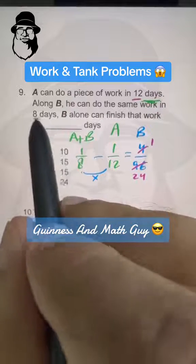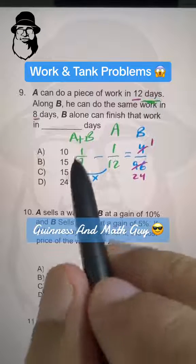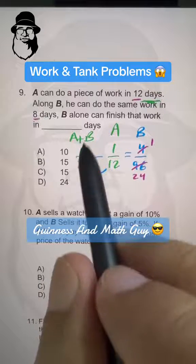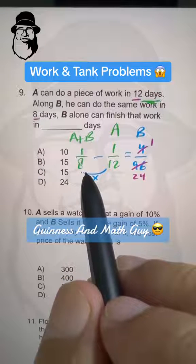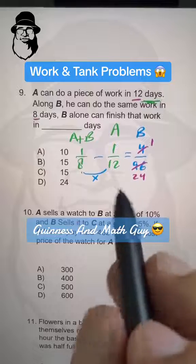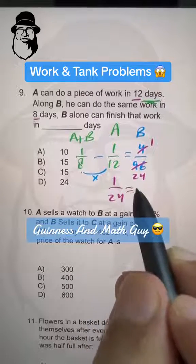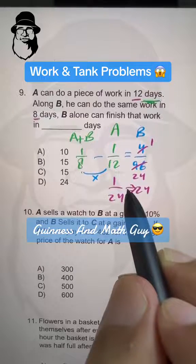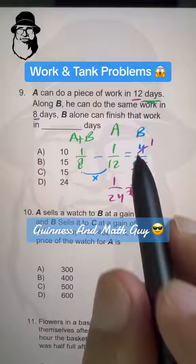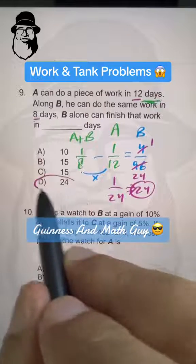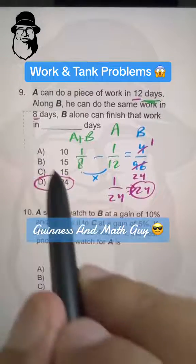And when we flipped 8, it became 1 over 8, and that was the efficiency, combined efficiency of A plus B, work done in 1 day. Now this is B's efficiency, 1 over 24. When we flip it, make it 24 over 1 or 24, then it becomes the number of days B will take alone to complete the work. Now let's do the shortcut.